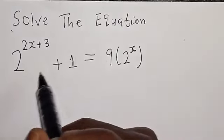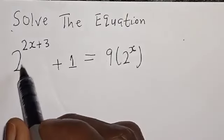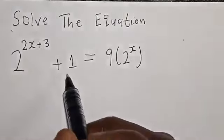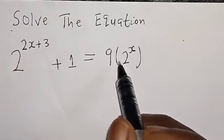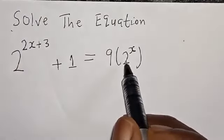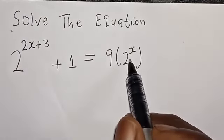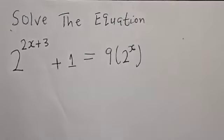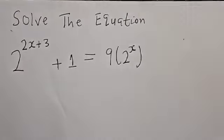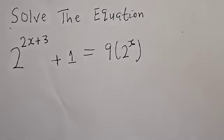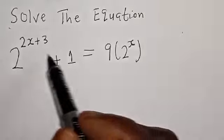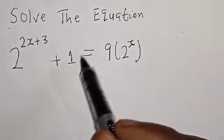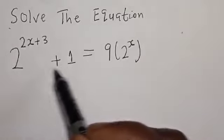Solve the equation 2 raised to power 2s plus 3 plus 1 is equal to 9 multiplied by 2 raised to power s. Hi everyone, welcome to my class, the Olusta class, where we teach mathematics and statistics. In today's class, we quickly want to find the value of s from this given exponential equation.